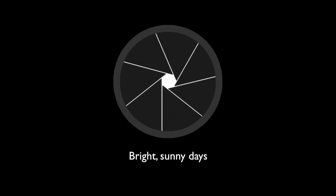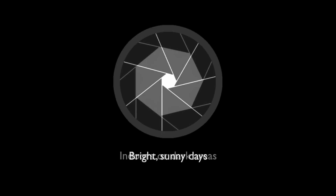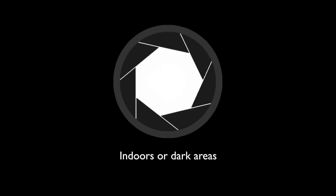The aperture of your camera is very similar to the iris of your eye — it opens and closes to let more or less light in. On a very bright sunny day outdoors you'd want to open up the aperture just a little. If you're going inside or in a dark area, you'd want to open the aperture larger to let more light in.